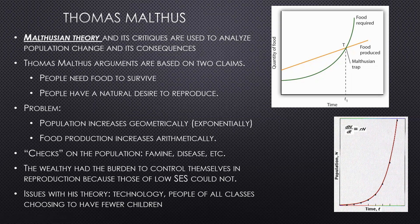Based on this premise, Malthus argued that human population would outpace people's ability to produce food, leading to widespread starvation and disease — something he called 'negative checks.' Nature would have checks on the population through famine or disease when carrying capacity is exceeded. He also argued that the wealthy have a burden to control their reproduction because those of low socioeconomic status could not.